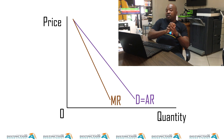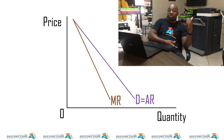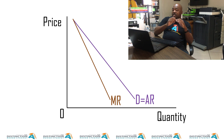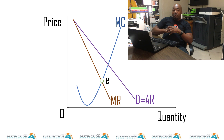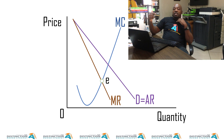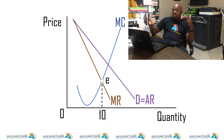Just like a perfect competitor, the monopolist also has to maximize its profit and applies the same profit-maximizing rule. We introduce the marginal cost curve, and when we do, we see that it intersects MR at some point — we call it point E. This point E is not a point of equilibrium, but it is the profit-maximizing point. It gives us the profit-maximizing output, so this monopoly should sell 10 units, because that is where it maximizes its profits.